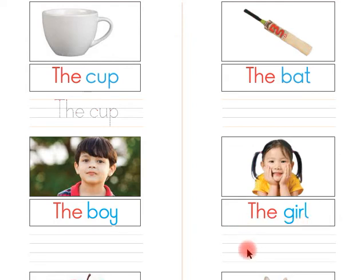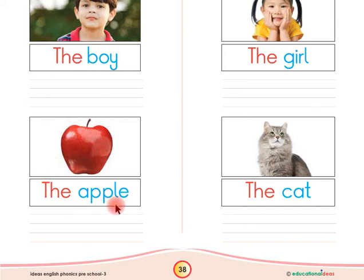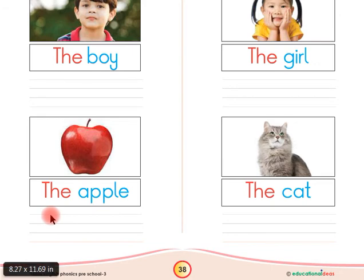Now look at this, children: the apple. Listen again, children: the apple. Listen one more time, children: the apple. Now say with me, children: the apple. Say again, children: the apple. Now read with me, children: the apple. Children, now you have to write 'the apple' here in between these four lines by yourself.